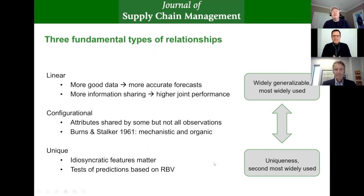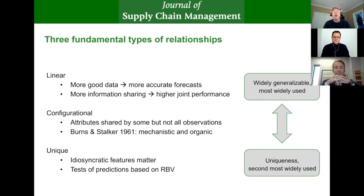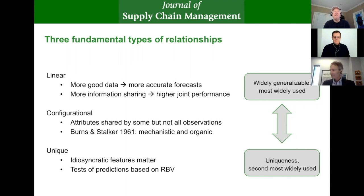Just to cast things in a broad sense, our belief is that research looks at three fundamental types of relationships. The first of those, which is the most common type, are linear relationships, where we're basically saying more of A leads to more of B, or more of A leads to less of B. One example there would be a pretty common belief that the more good data we have in hand, the more accurate we can forecast the future.